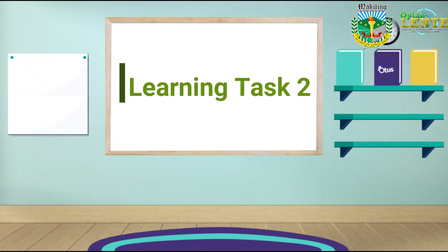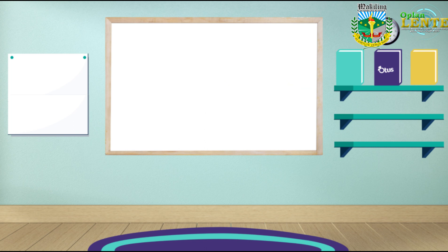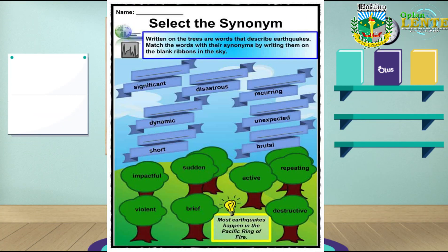Now let's try another one. Apply your English skills in answering this next learning task. This learning task is entitled 'Select the Synonyms.' Written on the trees are words that describe earthquakes. Match the words with their synonyms by writing them on the blank ribbons in the sky.